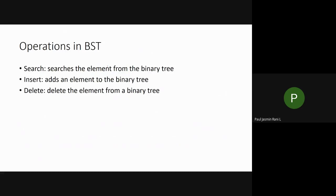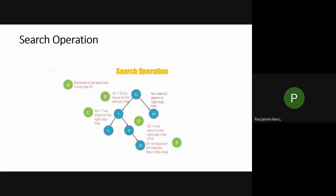The basic operations of a binary search tree are: searching — checking whether a particular element is present or not; insertion — inserting a new element into the binary tree; and deletion — removing a particular element from the binary tree. We are going to discuss all these operations in detail. Let's start with the search operation.